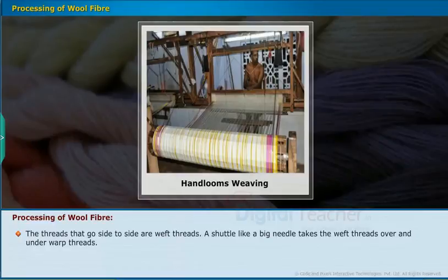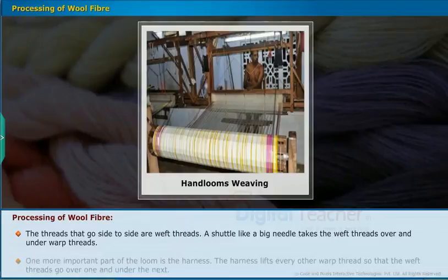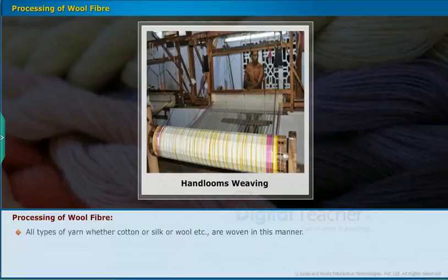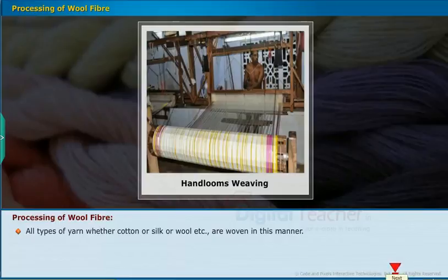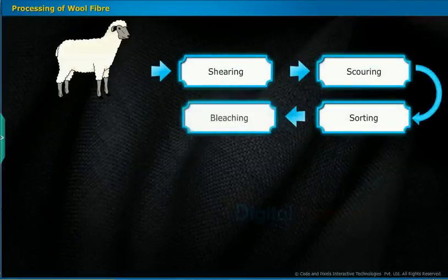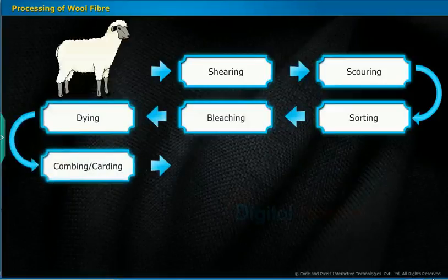A shuttle like a big needle takes the weft threads over and under the warp threads. One important part of the loom is the harness, which lifts every other warp thread so the weft threads go over one and under the next. All types of yarn — whether cotton, silk, or wool — are woven in this manner. The flowchart on the screen shows the process involved in obtaining wool to produce fabric.